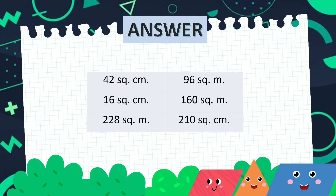We have here the answers — the area of the parallelograms: 42 square centimeters and 96 square centimeters. Area of triangles: 16 square centimeters and 160 square centimeters. And for the area of trapezoids: 228 square meters and 210 square meters.